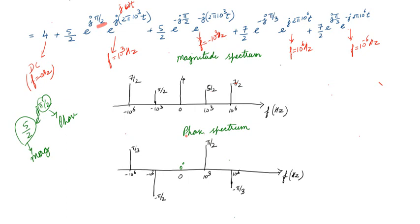The phase angle corresponding to frequency 10⁶ Hz is −π/4. Making a small correction: at −10⁶ Hz the phase angle is +π/4. So this is the magnitude spectrum and this is the phase spectrum. Note that the magnitude spectrum is always even symmetry — whatever magnitude is present at a positive frequency, the same magnitude is present at the negative frequency. At 10³ Hz the magnitude is 5/2; at −10³ Hz it is still 5/2. At 10⁶ Hz it is 7/2; at −10⁶ Hz it is also 7/2.